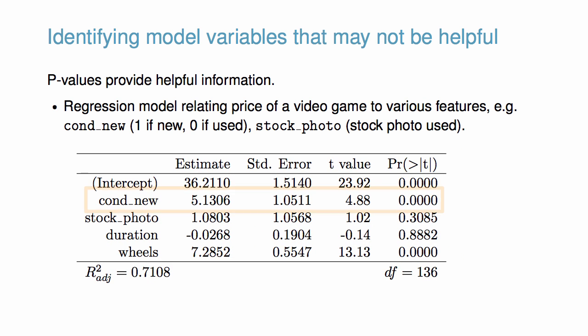For example, the coefficient of cond_new has a t-test statistic of 4.88 and a corresponding p-value of about zero. Therefore, if we keep all the variables in the model and add no others, then there is strong evidence that a game's condition has a real relationship with the total auction price.